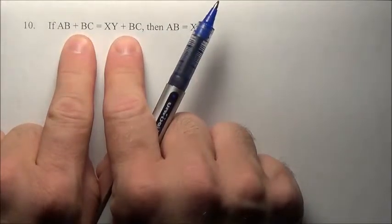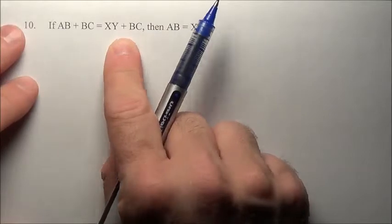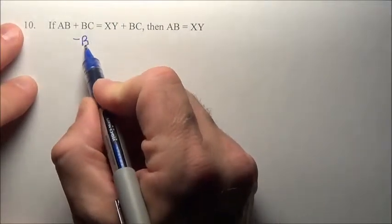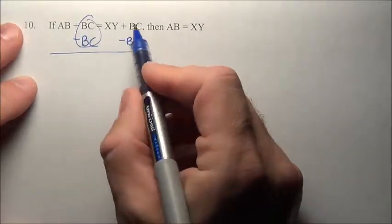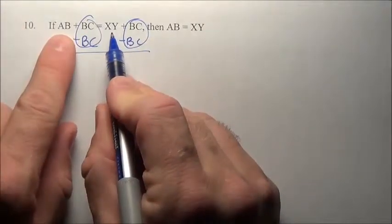How did we get rid of adding a BC to both sides? We got rid of it by subtracting a BC on both sides. That went away, that went away and you were left with AB equals XY.